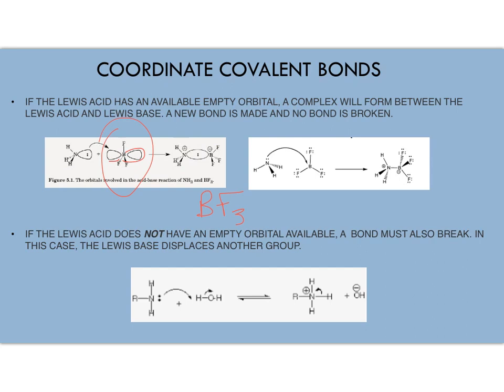So boron trifluoride only has six valence electrons; it has an empty p orbital. We'll show you pictures later. It is because of that empty orbital the Lewis base can directly form a bond with the boron, and so the product you get is what we call a complex between the Lewis acid and the Lewis base. All you've done is make a new bond—you haven't broken any bonds—and that will happen if you have an empty orbital on the Lewis acid.